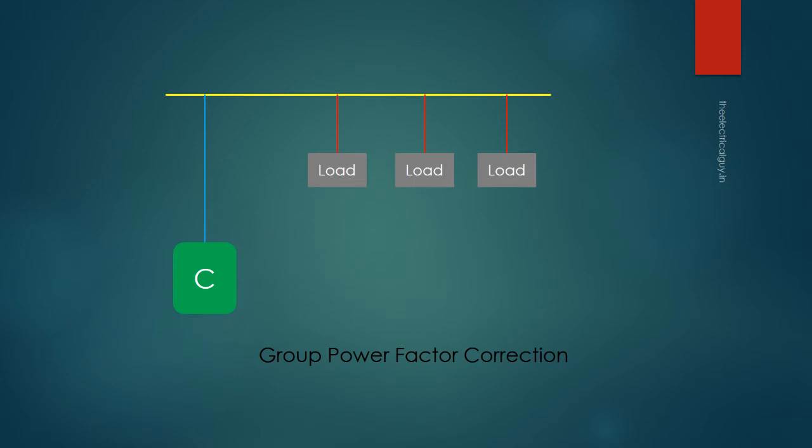So for example, if you have three similar induction motors which are being used for the same reason, you can use a common capacitor bank for power factor correction. This method is also economical but recommended only for small loads.